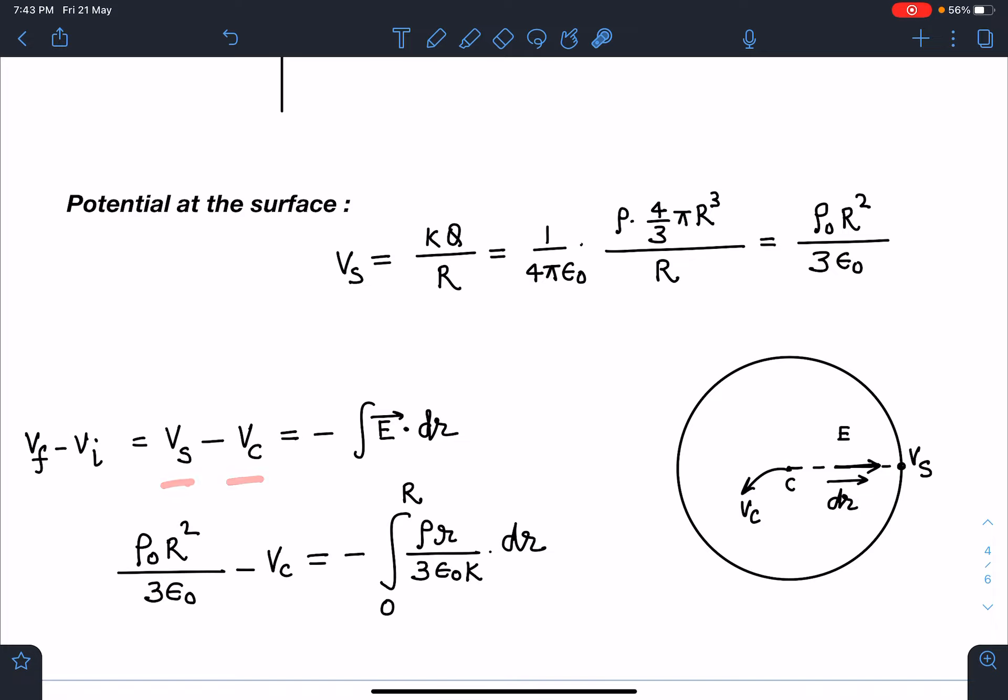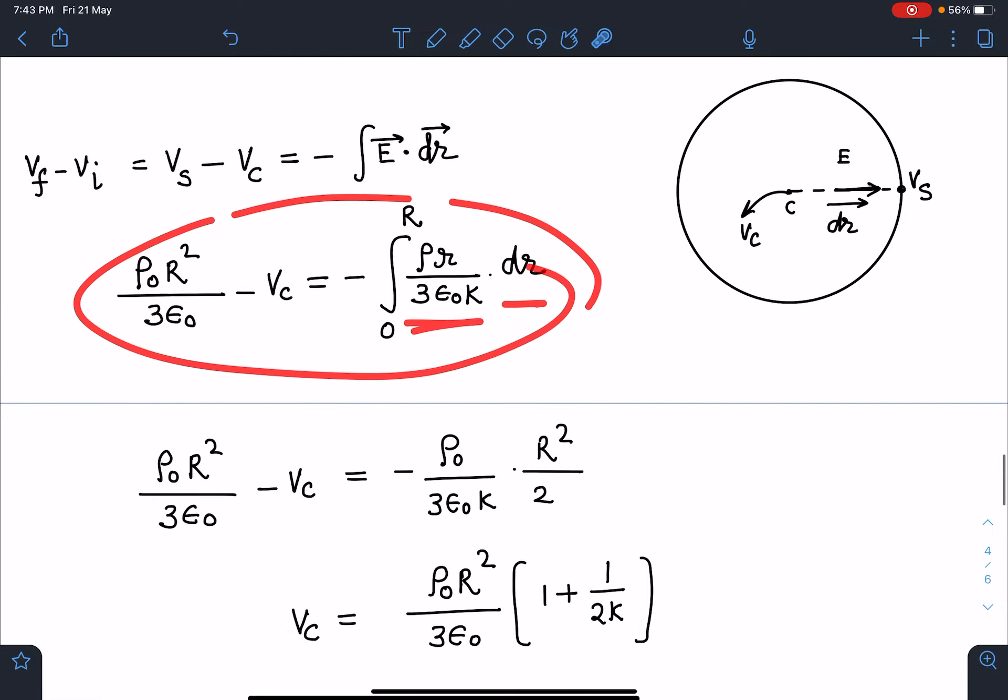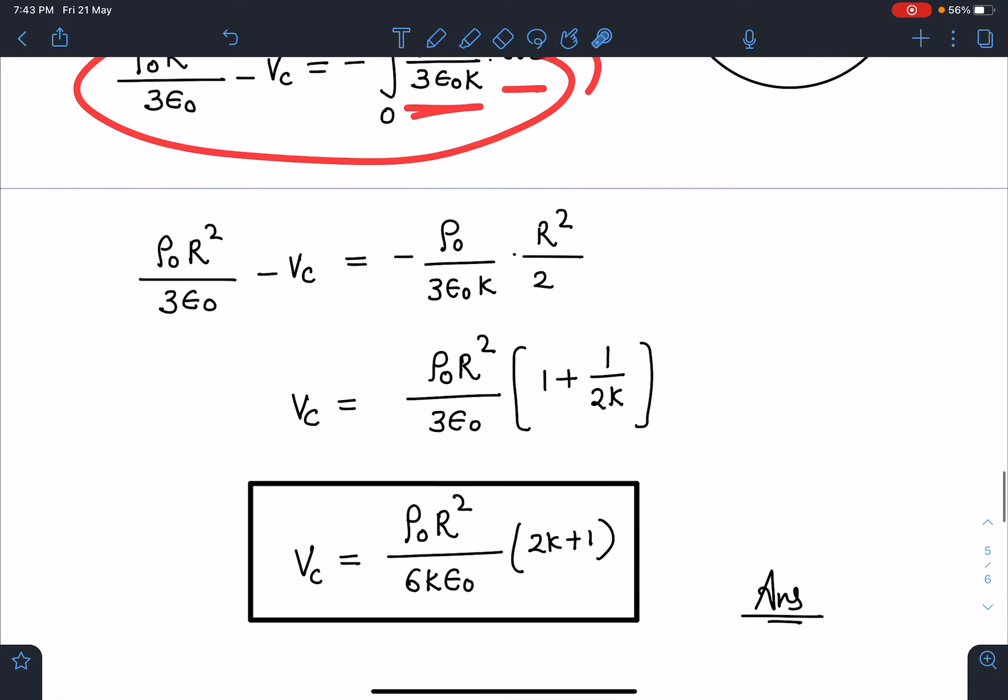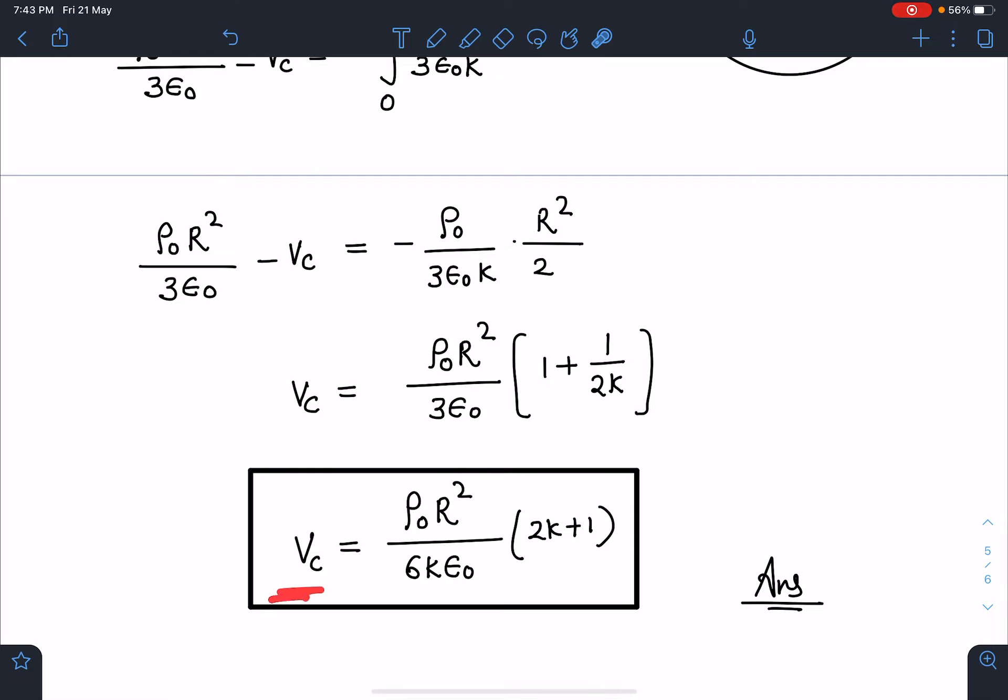Initial point is C here and final point I am taking at surface. So now you can see V final minus V initial is equal to minus E dot dr. This E and dr vector both are in same direction, so it will simply become E dr. So V surface just now we have calculated ρR² by 3ε₀ minus V_c is equal to minus 0 to R ρr by 3ε₀k dr. So when you integrate this and simplify we are going to get V_c is equal to ρ₀R² by 6kε₀ times (2k+1). This is going to be the answer for this problem.